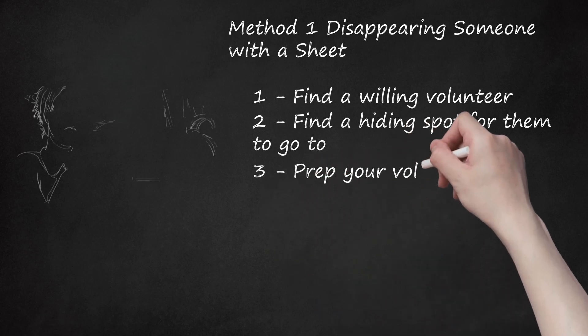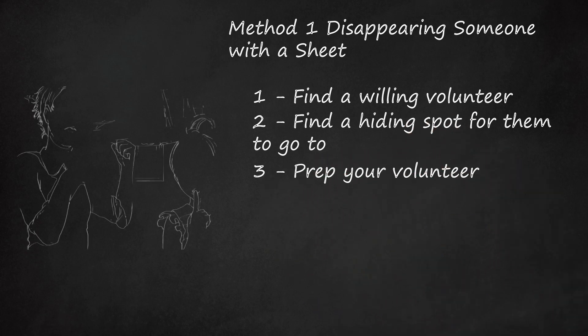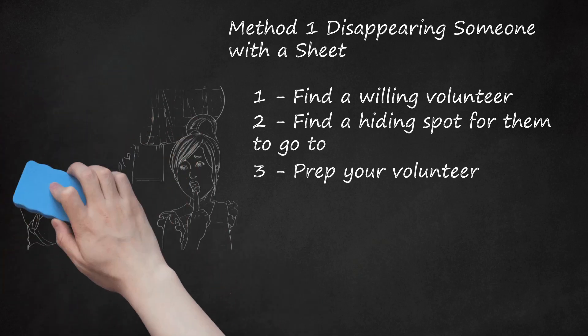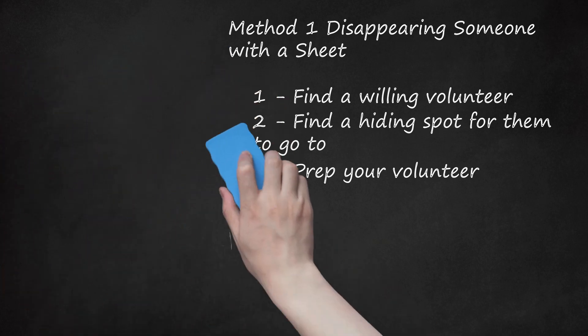Step 3 - Prep Your Volunteer. Explain the lowdown of the trick's entirety to your volunteer. Go through a few practice runs of where they shall hide and when they shall hide. Prepare trigger words like abracadabra or presto to indicate when your volunteer hides and when she reappears. Run a simulation of the trick with your volunteer so that you're both on the same page.